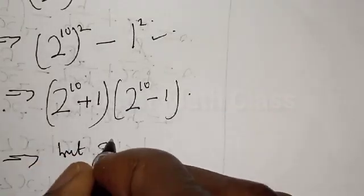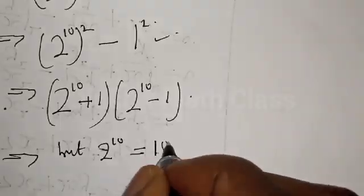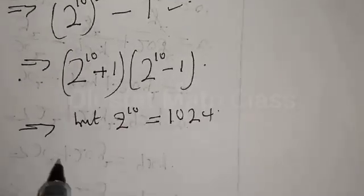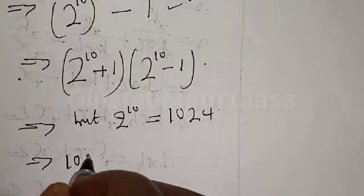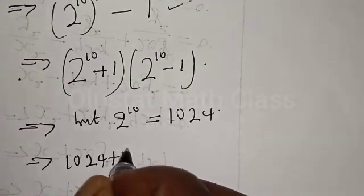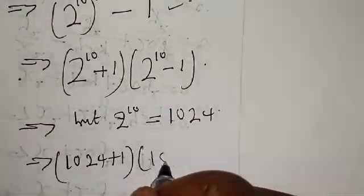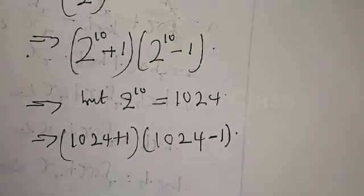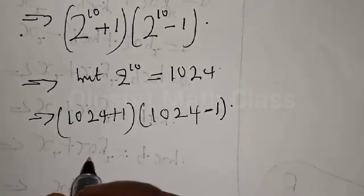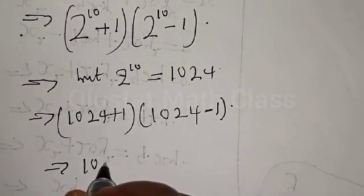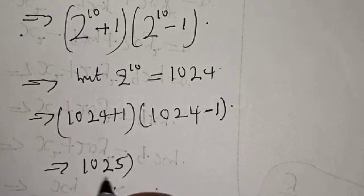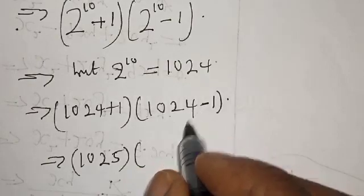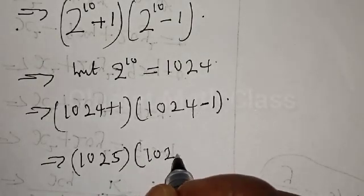But 2 raised to power 10 equals 1024. So this implies we have 1024 plus 1 into 1024 minus 1. Then 1024 plus 1 is 1025, and 1024 minus 1 is 1023. So we now have 1025 multiplied by 1023.